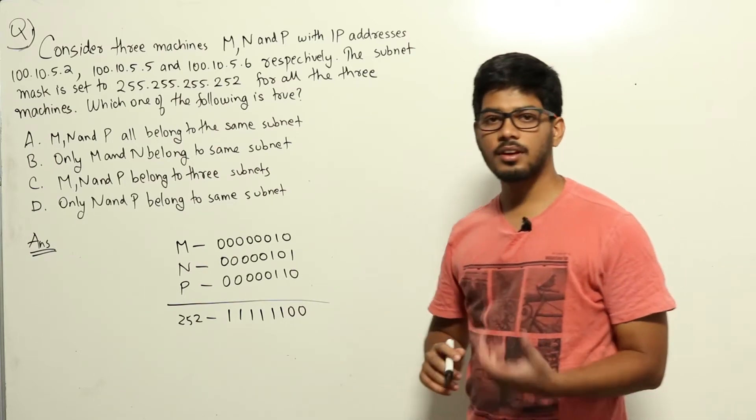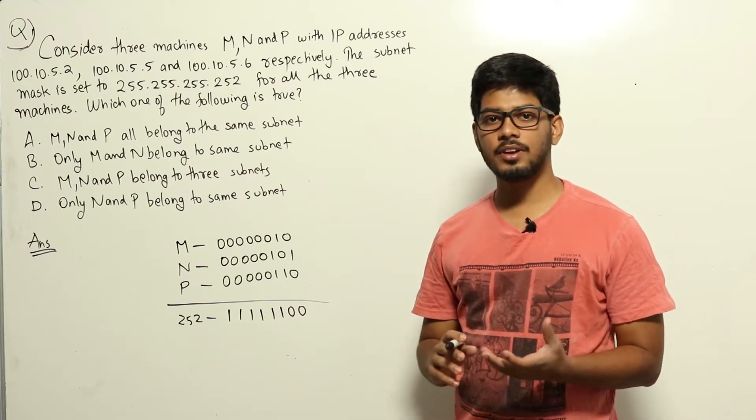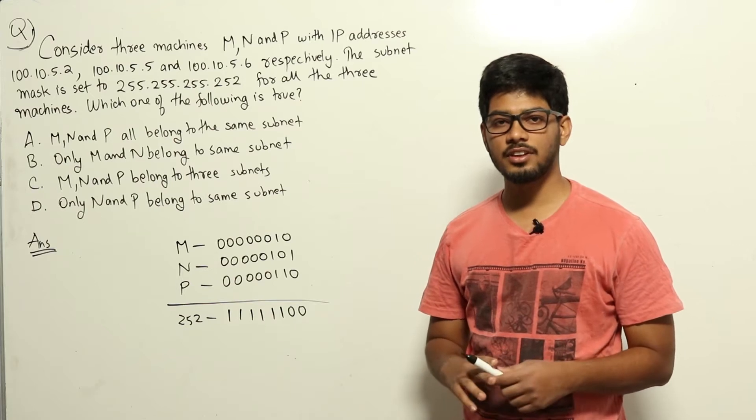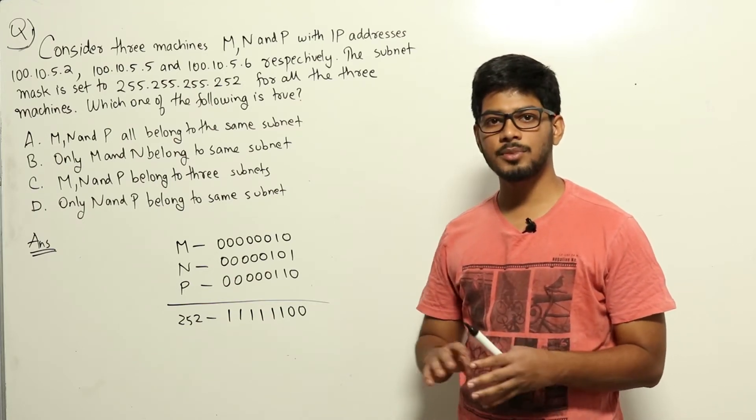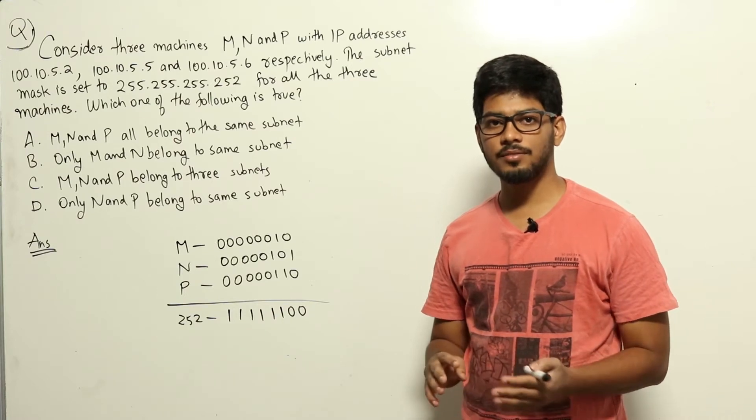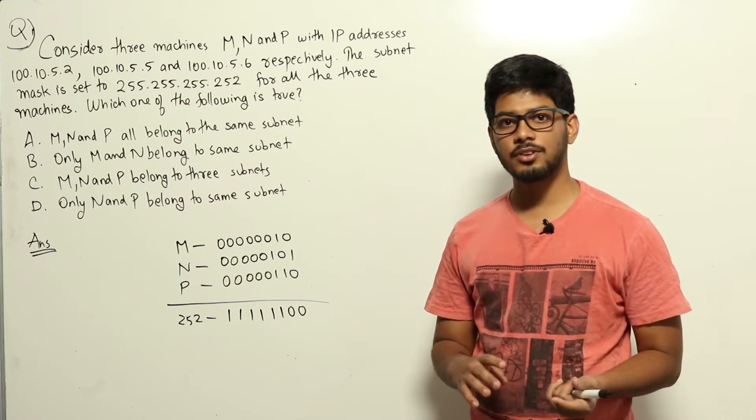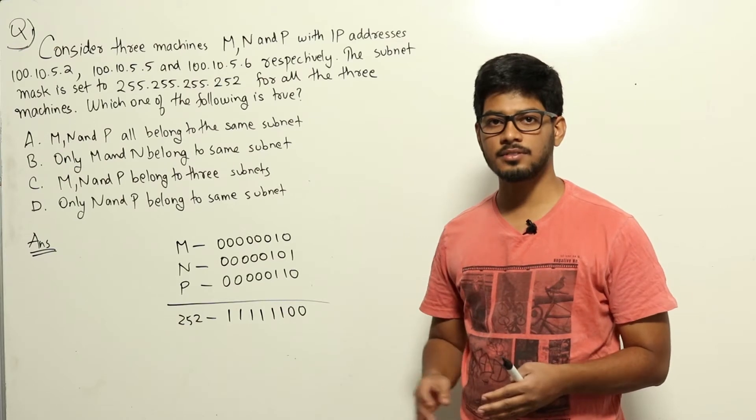How a router finds out a given IP address belongs to which network is that it will do the bitwise AND of the given IP address with the subnet mask. Whatever value it will get, it will compare it with the network ID of each network that the router knows.